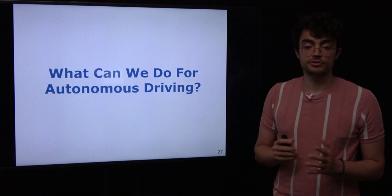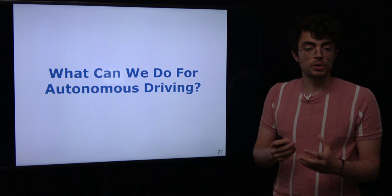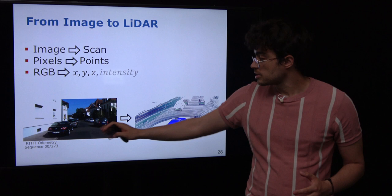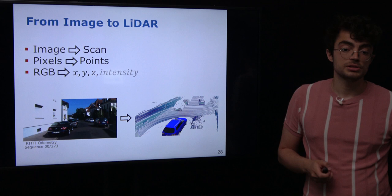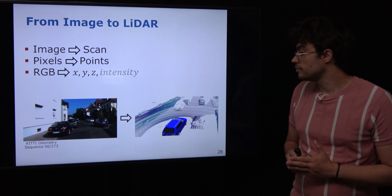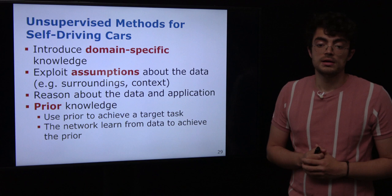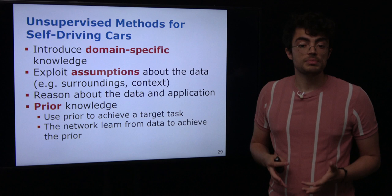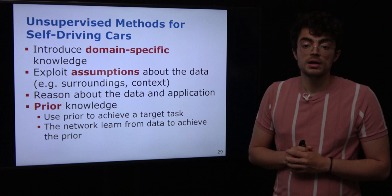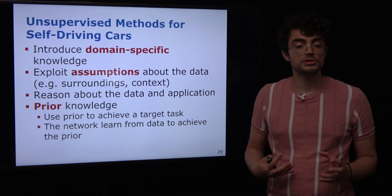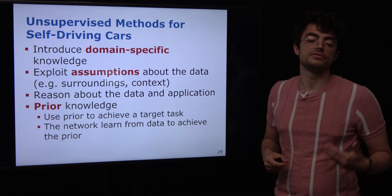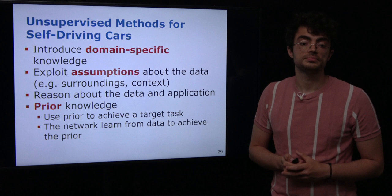We have seen some unsupervised methods to extract information from raw data, but how can we apply this to the autonomous driving context? We can think of a LiDAR scan as an image — one LiDAR scan corresponds to an image, and the points of the LiDAR correspond to pixels, but instead of RGB values we have XYZ and an intensity value per point. Since we are targeting an outdoor urban environment, we can introduce domain-specific knowledge and exploit assumptions about the data. Given this prior knowledge, we can use it to achieve the target task directly or as a pretext task for pre-training, then fine-tune to the actual target task.